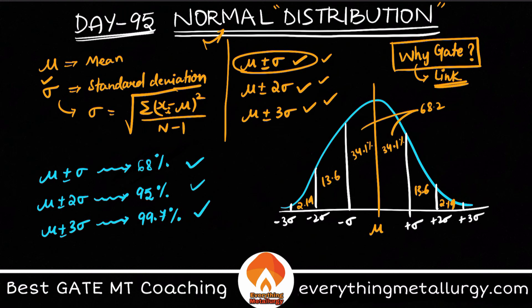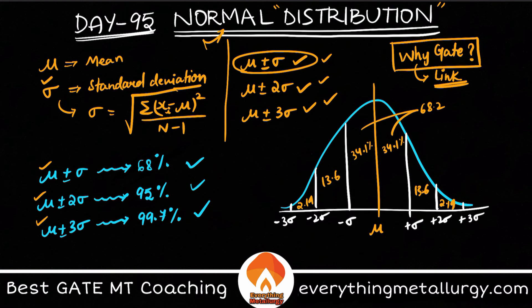This shows how data is distributed according to different tolerances and deviations. This is a simple but important topic — in previous year GATE papers, this question appears at least three to four times. If you know these values and this graph, you can easily pick up one or two marks.